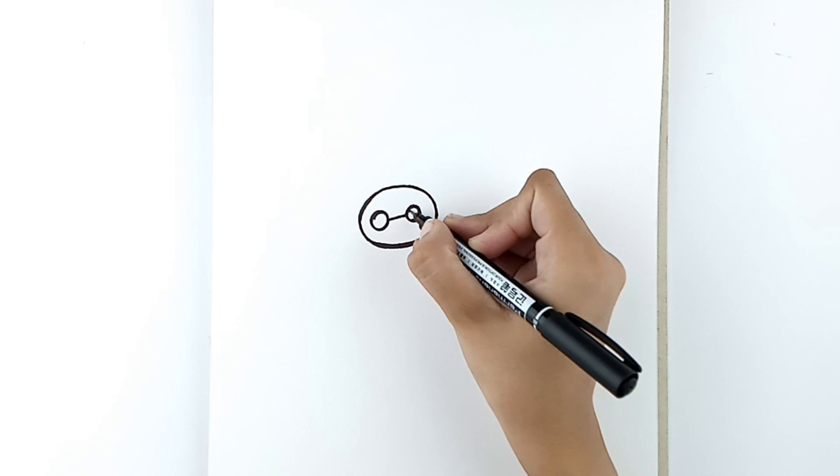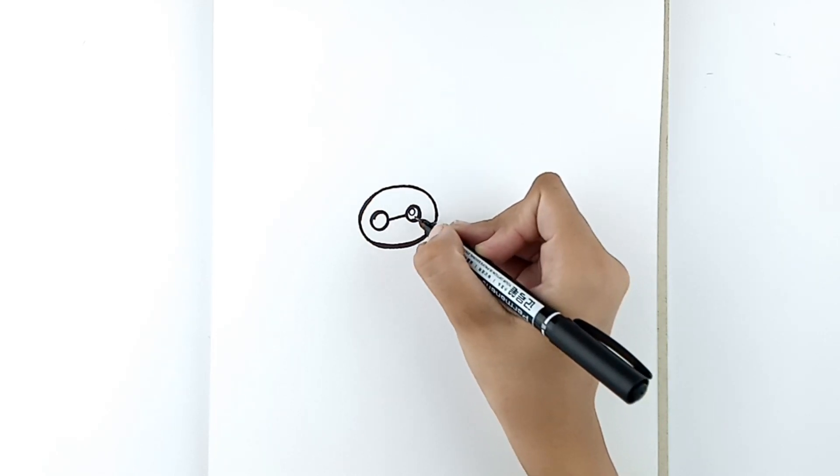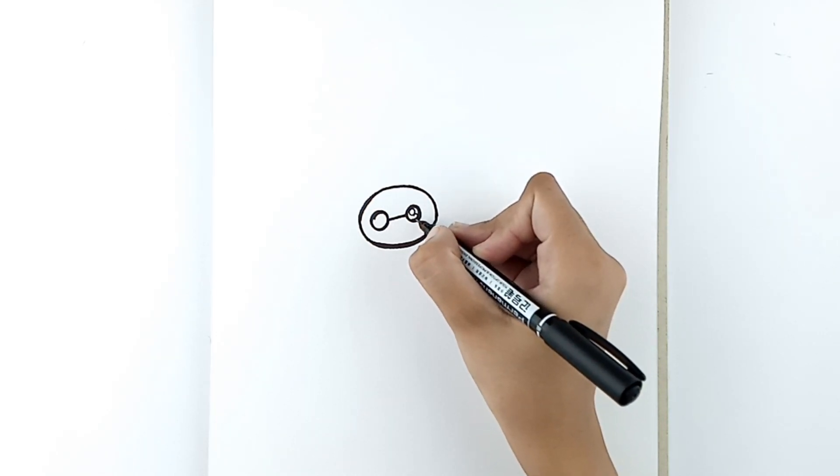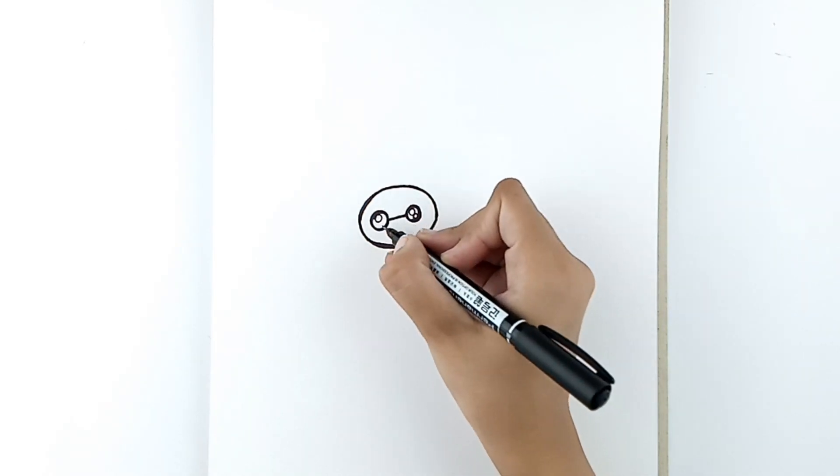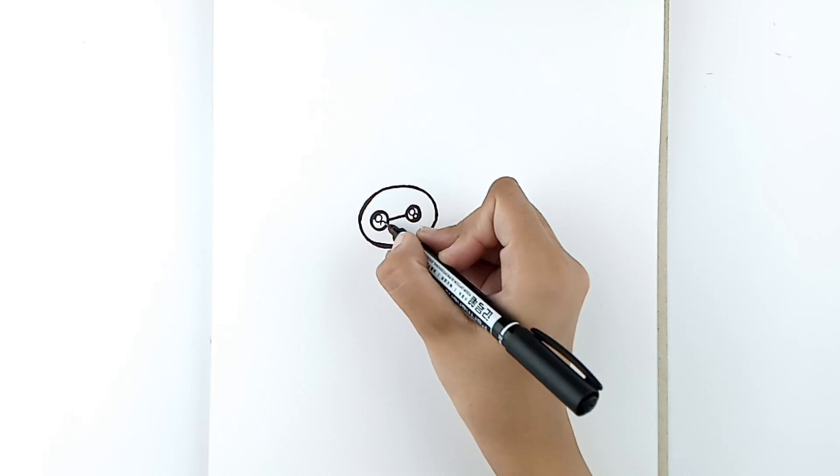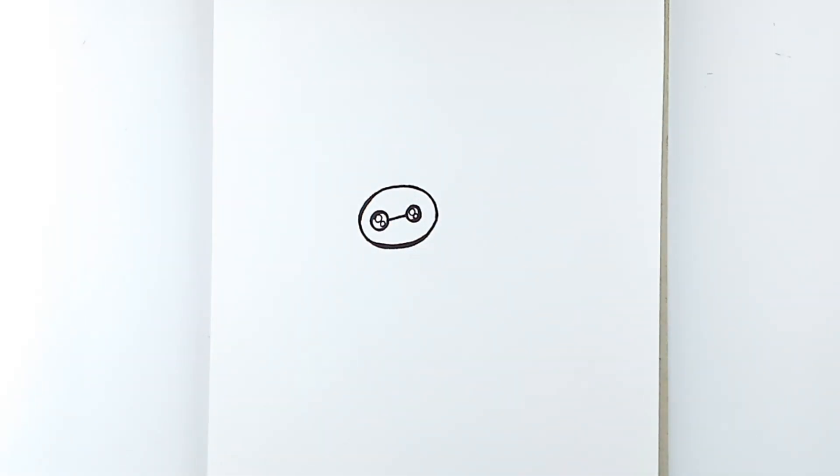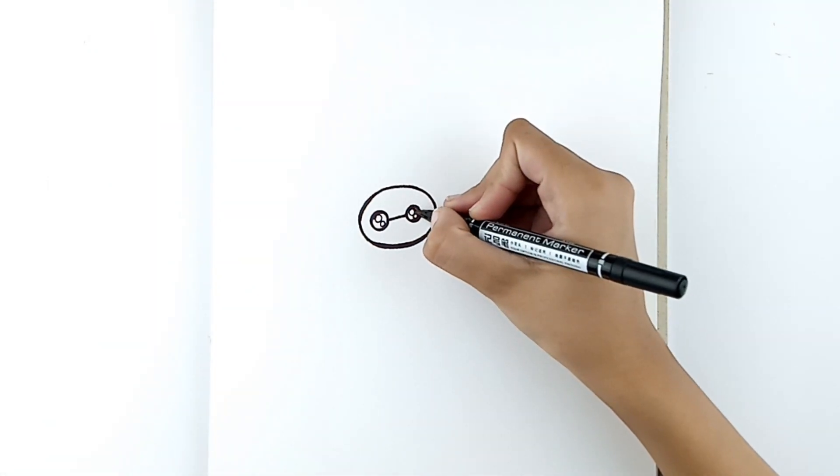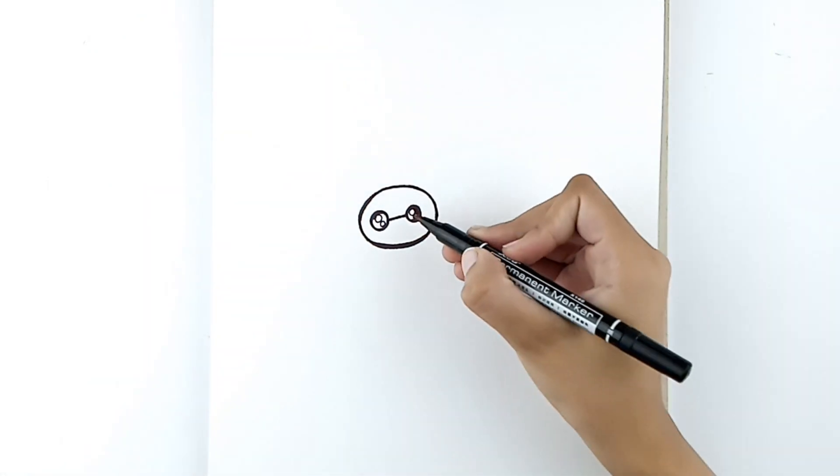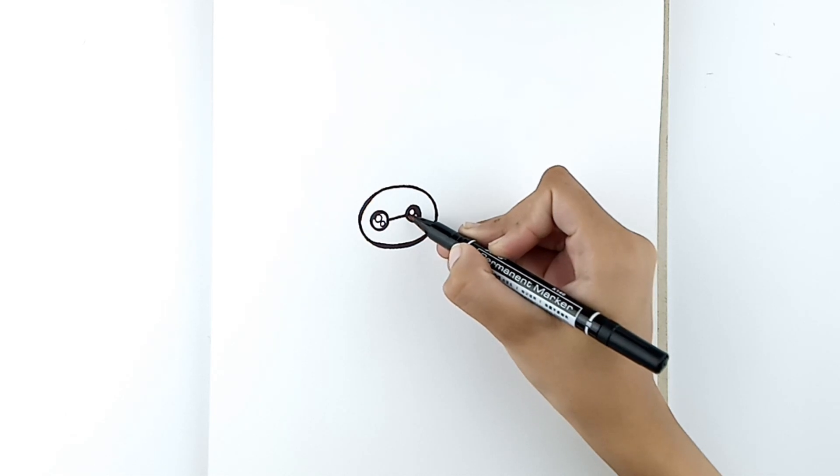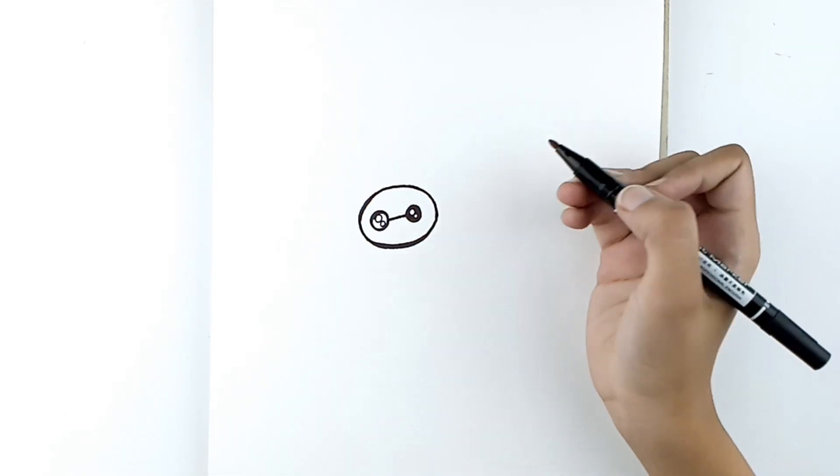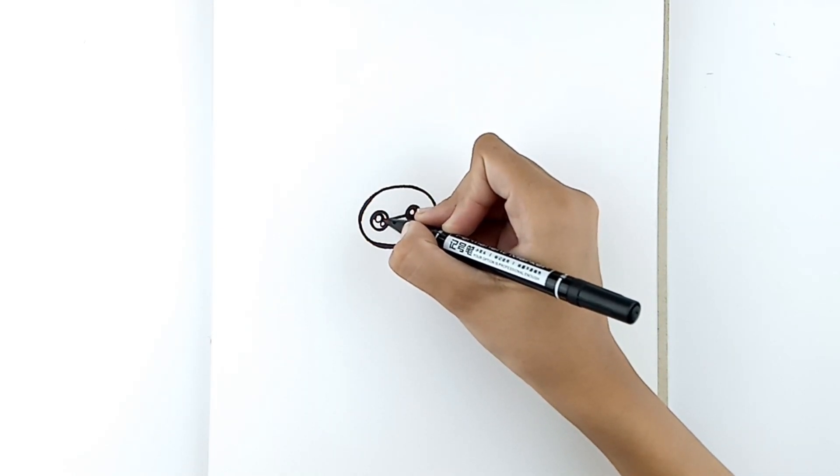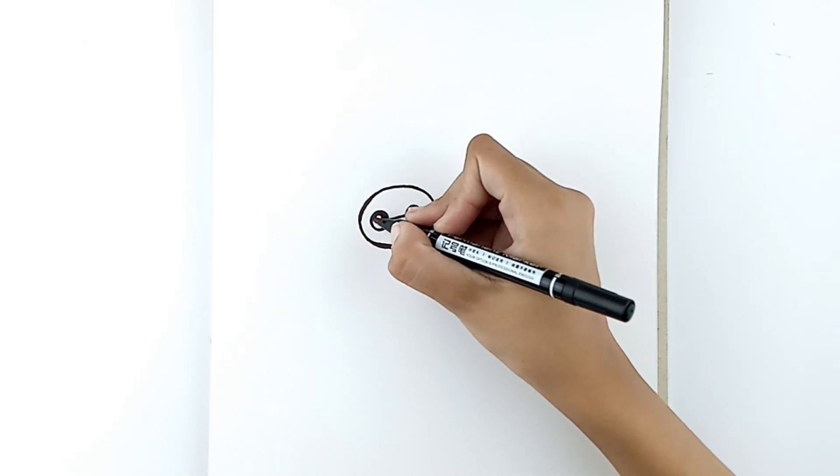Now, let's draw two tiny circles in each eye. Just like this. And now, fill in the gaps with the black marker. This will make your Baymax eyes look so cute.